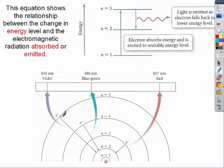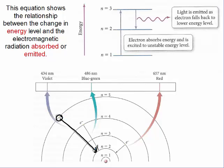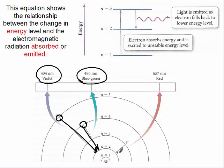If an electron falls from the fifth to the first energy level, that's a lot of energy given off, so it may come off in the form of violet light. Or if it went from the fourth energy level to the second energy level, a little bit less energy would be given off, so we would see blue-green color. Third to first would be a lot less, so red light would come off. Remember that violet is the highest in energy and red is the lowest in energy of the visible light.